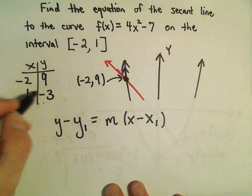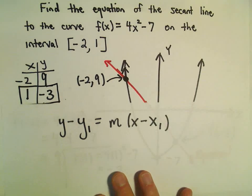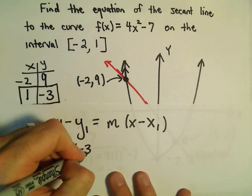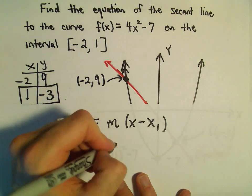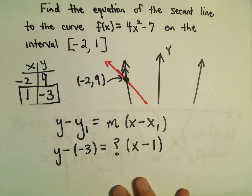We can use either one of these two points that we want. I'm going to use the (1, -3) because the numbers are smaller. So it says we would have y - (-3), the slope we still don't know yet, we'll figure that out in just a second, and then we would have x minus the x-coordinate, which is positive 1.